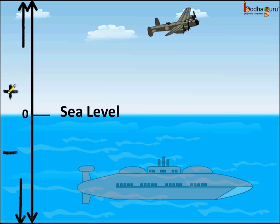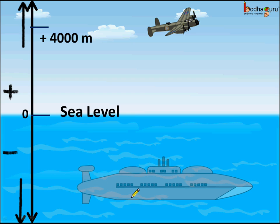So, positive above the sea level and negative below the sea level — positive height and negative height. The aeroplane is at plus 4,000 meters with reference to the sea level. And since the submarine is at 900 meters below the sea level, we can say it is at minus 900 meters height. So here we used integers to indicate height as a positive integer and depth as a negative integer.